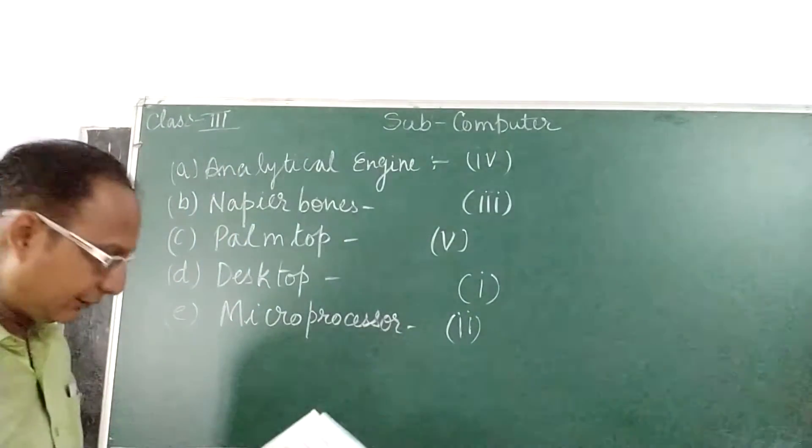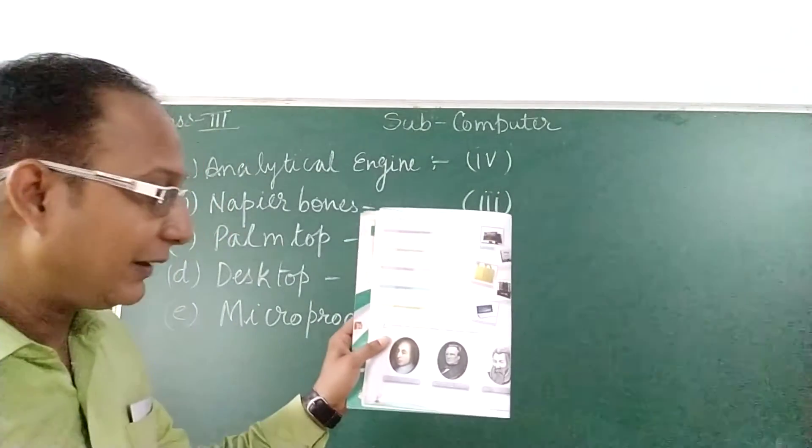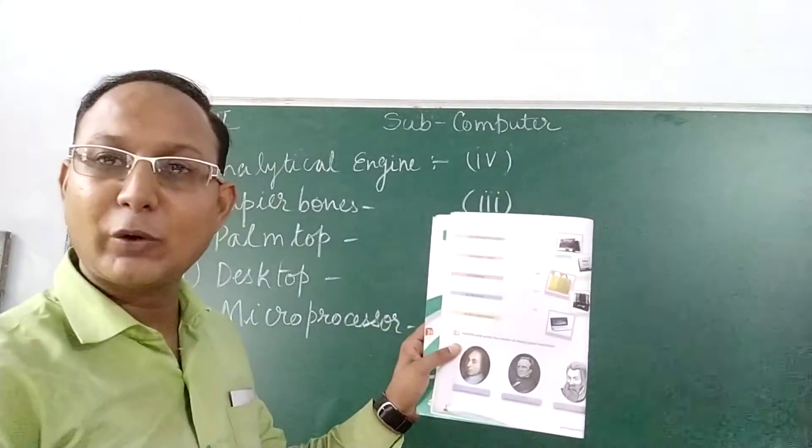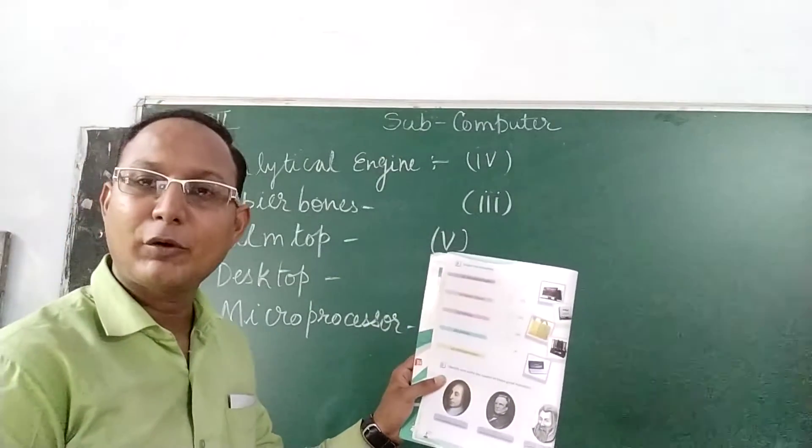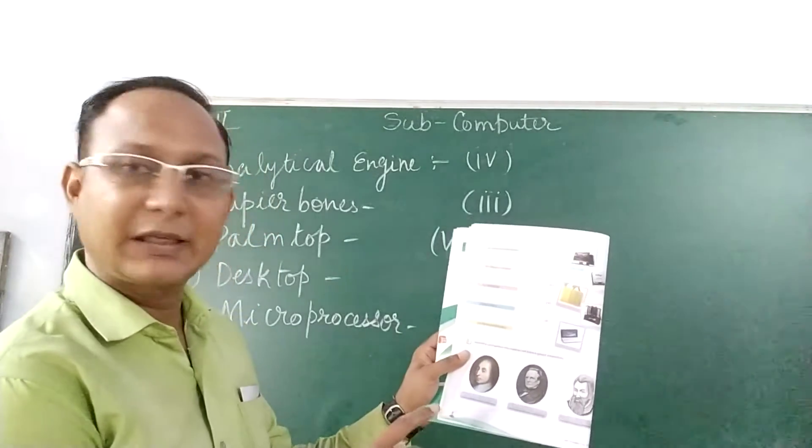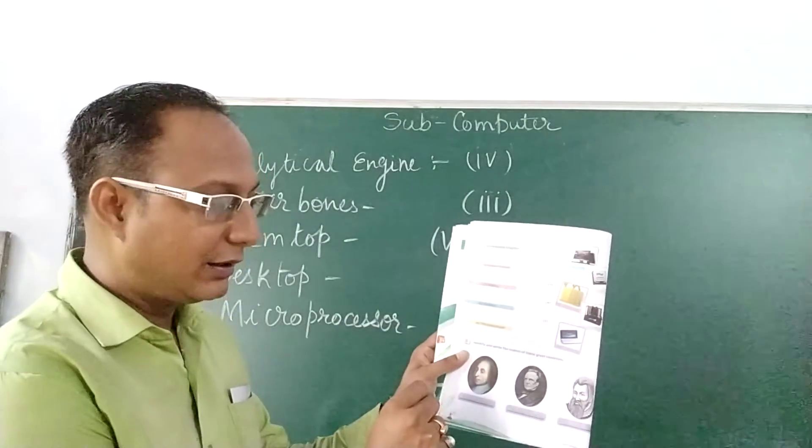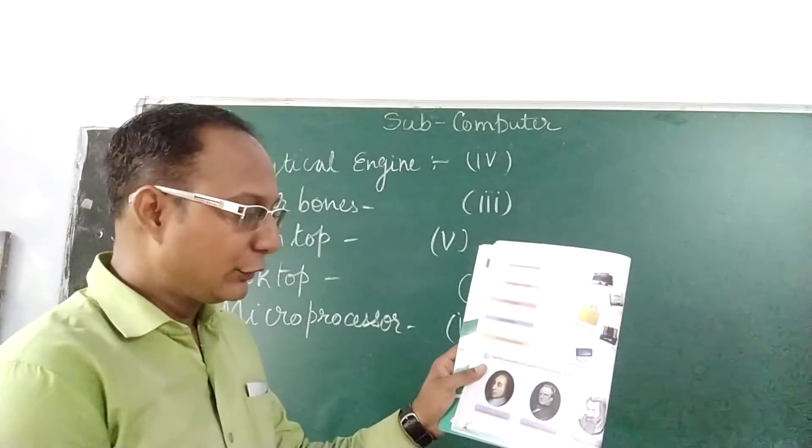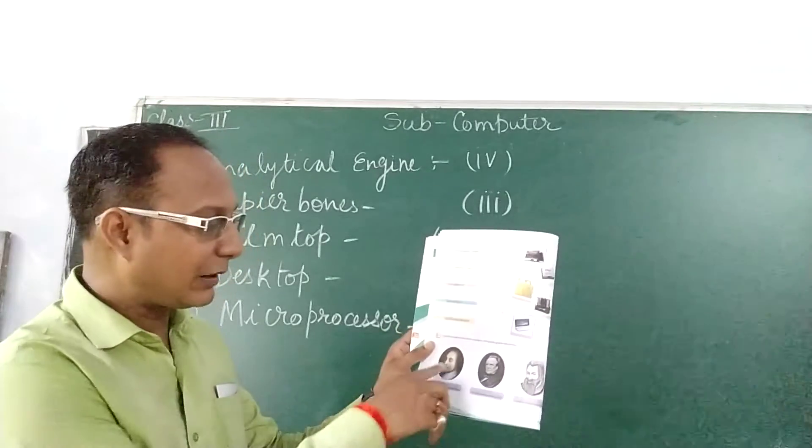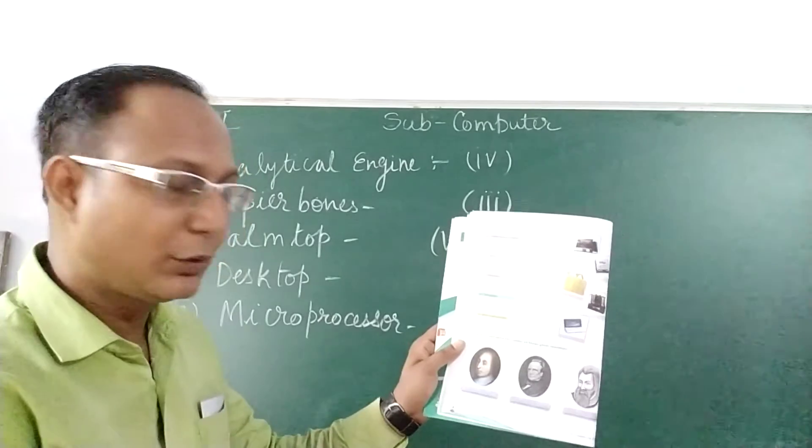In this exercise, you have been given some important inventor's images. First, you have to identify the name of the given inventor. You have to write the name of the inventor into your book. So, you can mark one, two and three. For number one, you can see the picture and you know the name. Who is he?